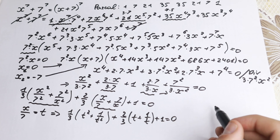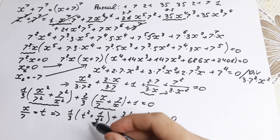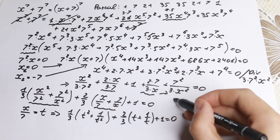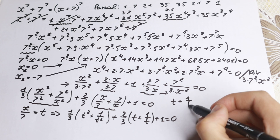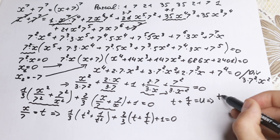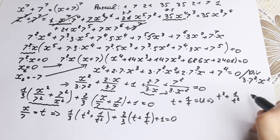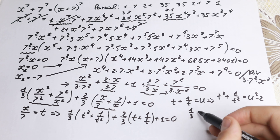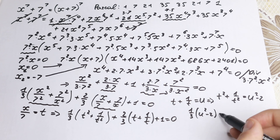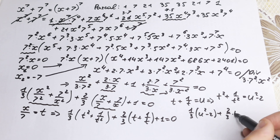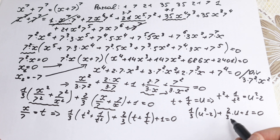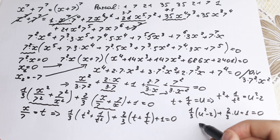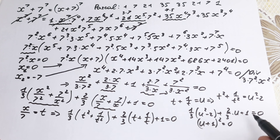After substitution, we have: (1/3)(u² - 2) + (2/3)u + 1 = 0. Multiplying by 3 gives: u² + 2u + 1 = (u + 1)² = 0. Therefore u = -1.